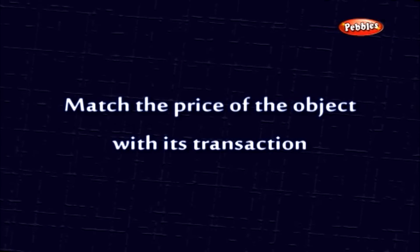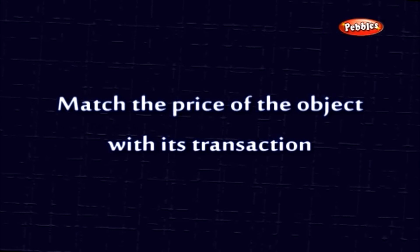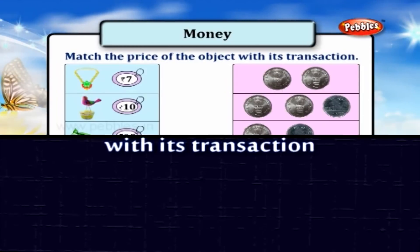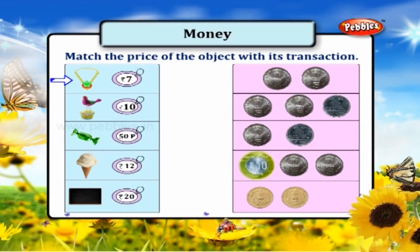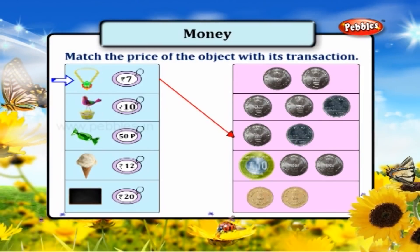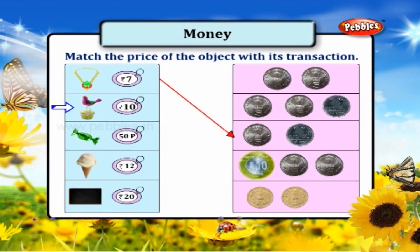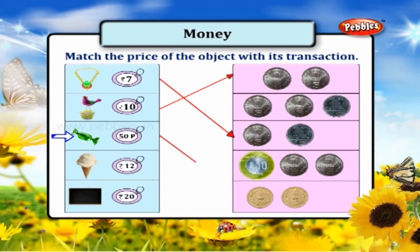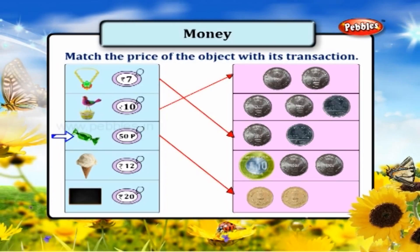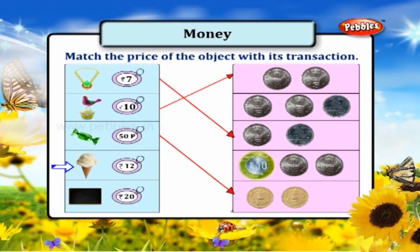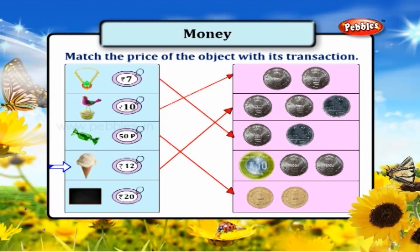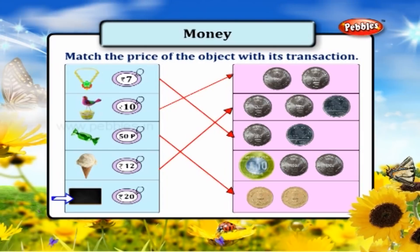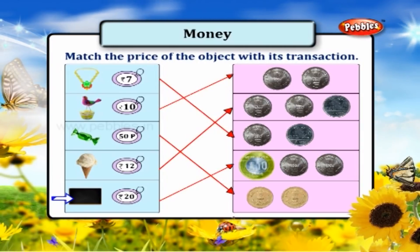Match the price of the object with its transaction. 7 rupees: 5 plus 2. 10 rupees: 5 plus 5. 50 paisa: 25 paisa plus 25 paisa. 12 rupees: 5 rupees plus 5 rupees plus 2 rupees. 20 rupees: 10 plus 5 plus 5.